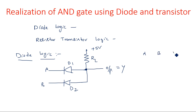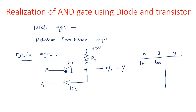Now let's take the truth table: inputs A and B, output Y. When A is low and B is low, that makes the diode turn on. If any one of the inputs is low, the diode has a chance to become on because P is connected to +5 volts and N is connected to 0 — giving 5 minus 0 = 5 volts, which is the required voltage for the diode to come into the on state. Then the output Y is low.